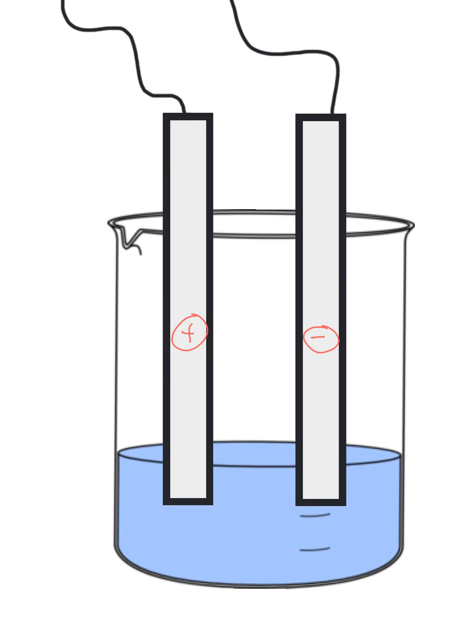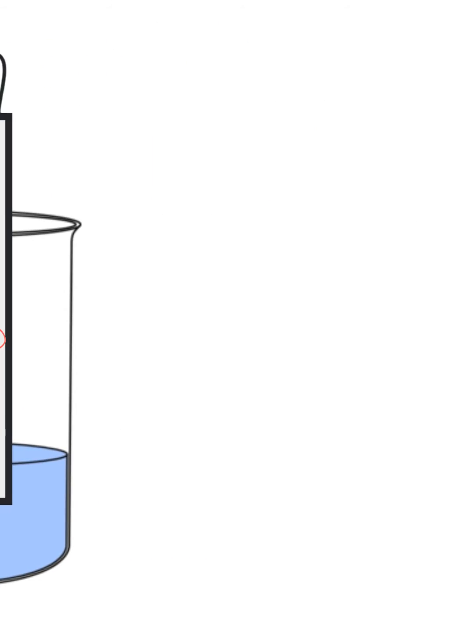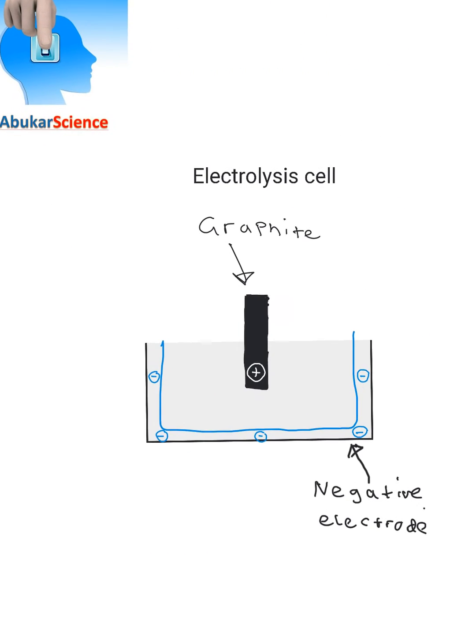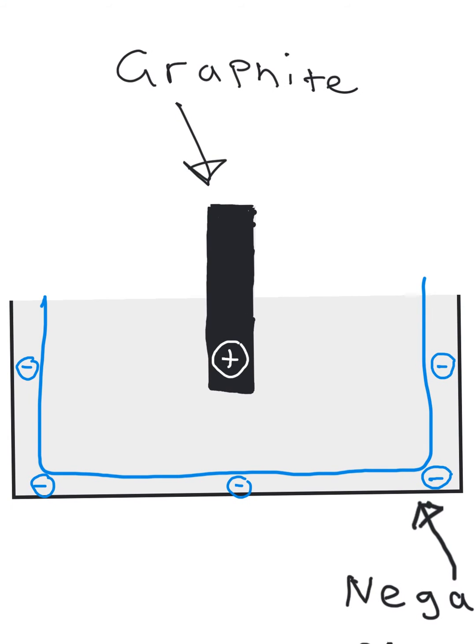Now it's not really set up like this in industry because the aluminium would have to be physically scraped off this electrode which is very time consuming. So they've got a modified version of this that looks a bit like this. What you have is your negative electrode over here at the bottom of the casing.